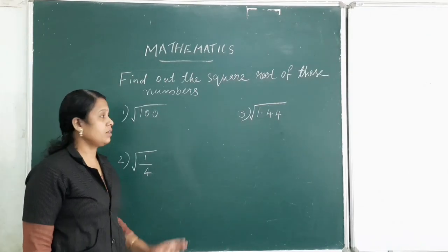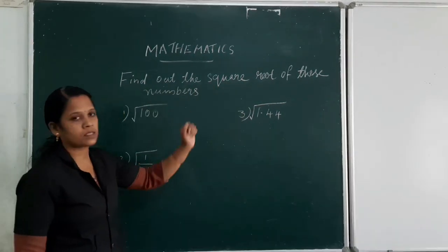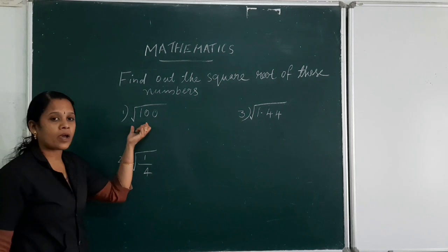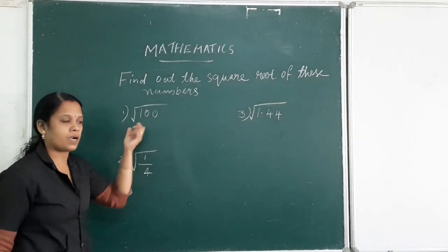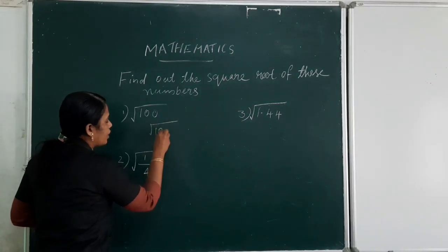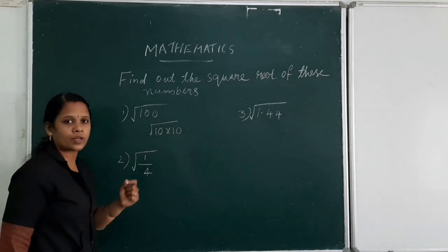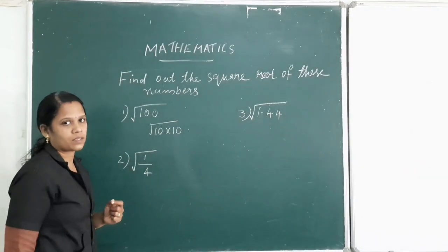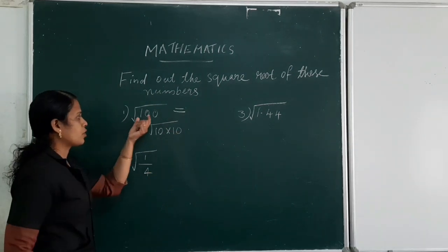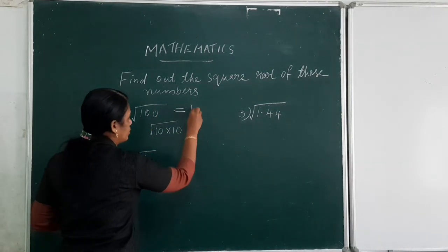Next, find out the square root of these numbers. Square root of 100: since 100 = 10 × 10, the square root of 100 is equal to 10.